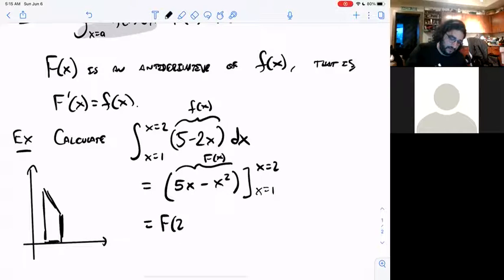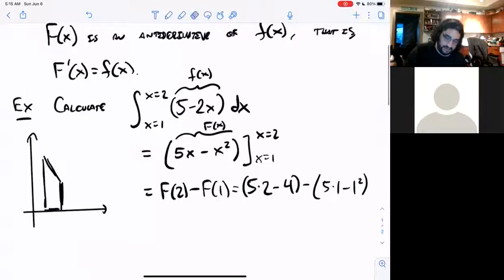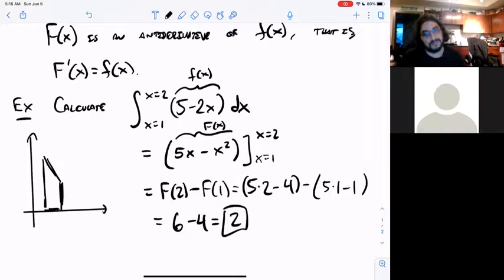All right, so I want big F of 2 minus big F of 1. Plug those in. So I get 5 times 2 minus 2 squared minus 5 times 1 minus 1 squared, right? And we get, what do we get when the dust clears? Let's see, 5 times 2 is 10 minus 4 is 6. Then I have over here, I have 5 minus 1 is 4, and we get 2, which is what we got by trapezoids and also by Riemann sums. So that worked just fine.